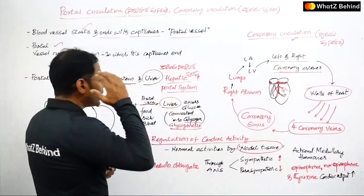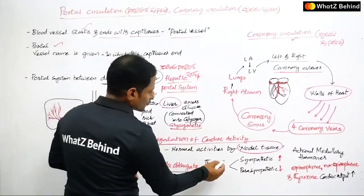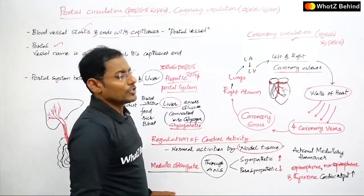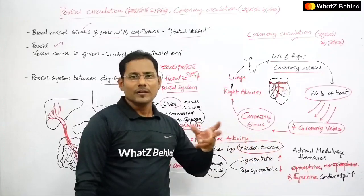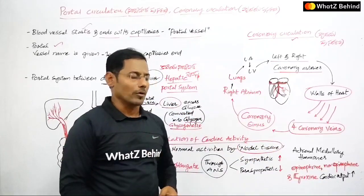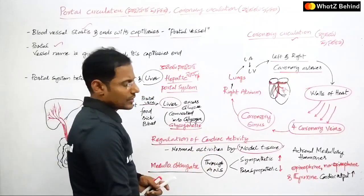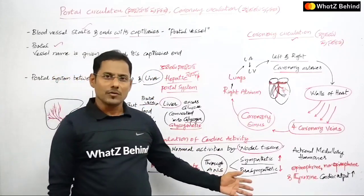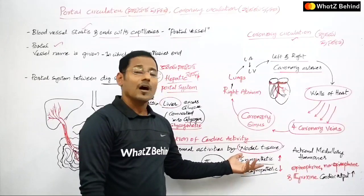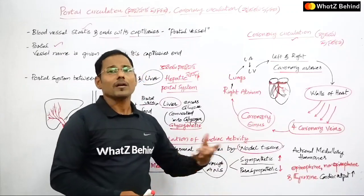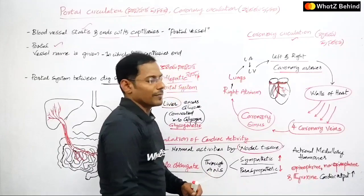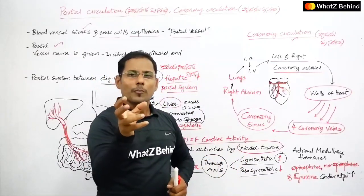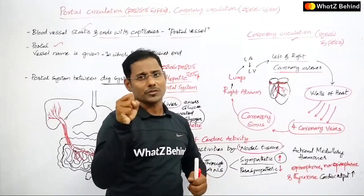The medulla oblongata controls cardiac activity through the autonomous nervous system. The autonomous nervous system has two divisions: the sympathetic nervous system (sahanubhoothi naadi vyavastha) and the parasympathetic nervous system. Cardiac activity is regulated by both. The sympathetic nervous system increases cardiac output, while the parasympathetic nervous system decreases cardiac output. This is an important point.